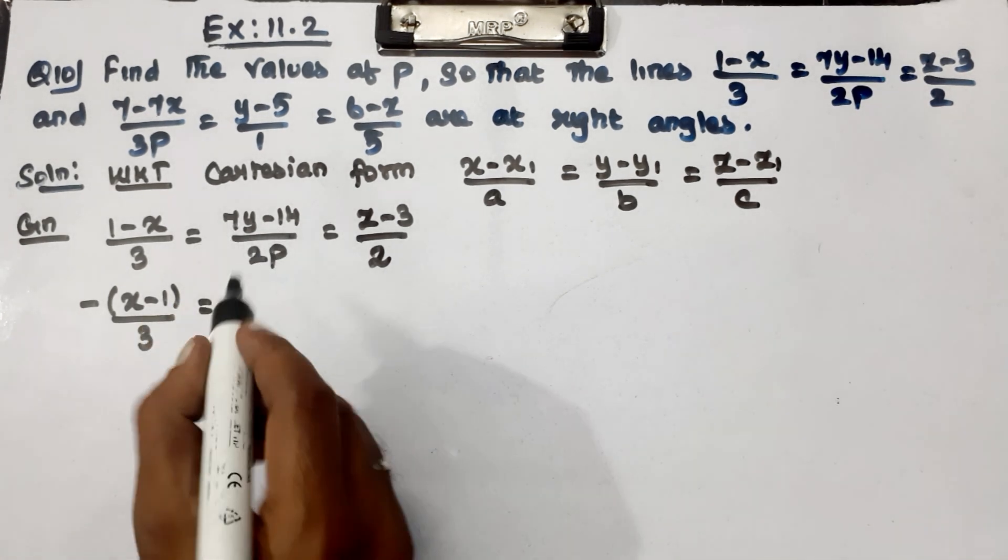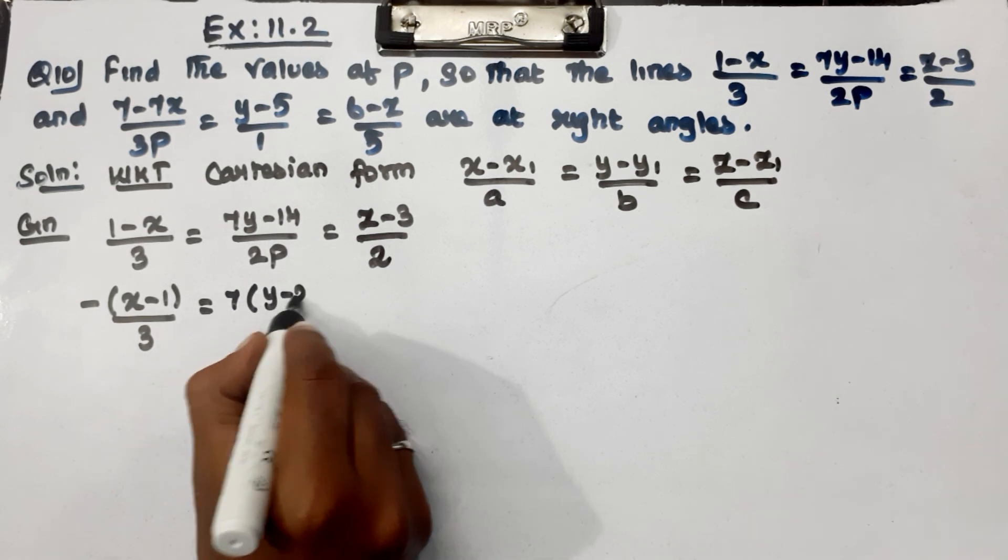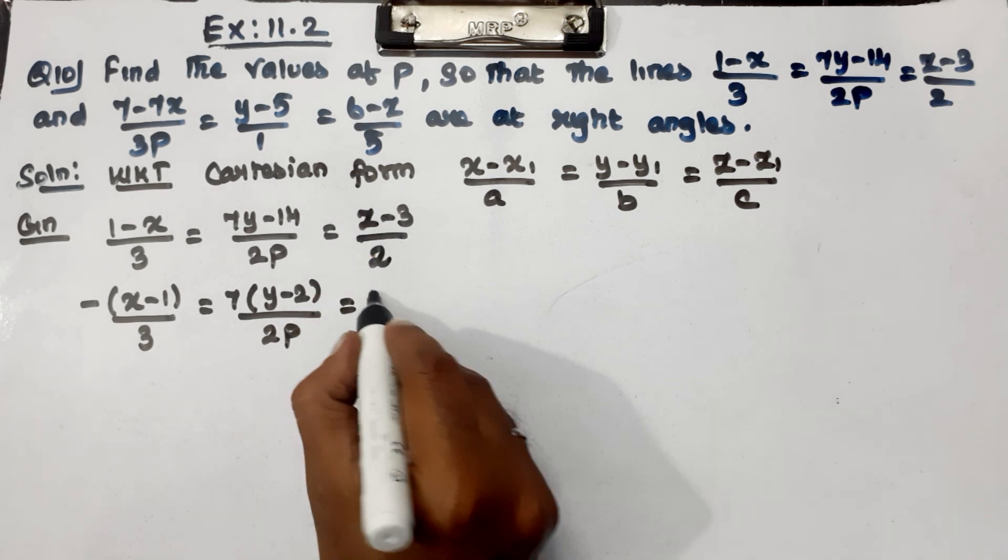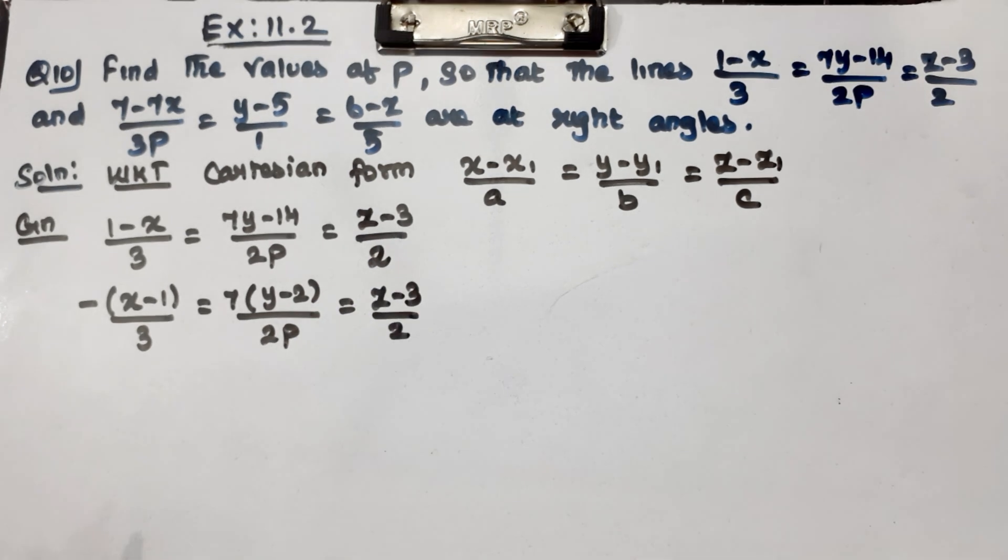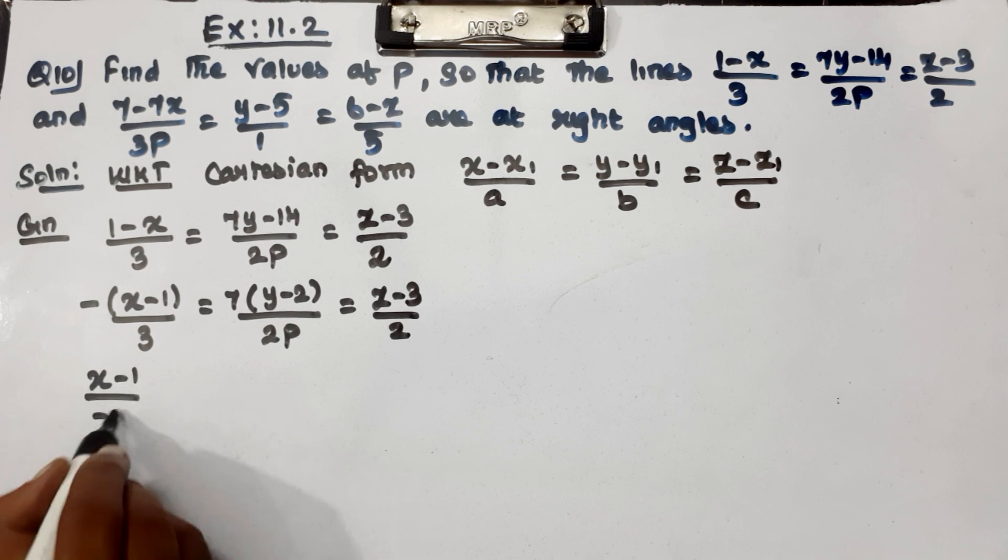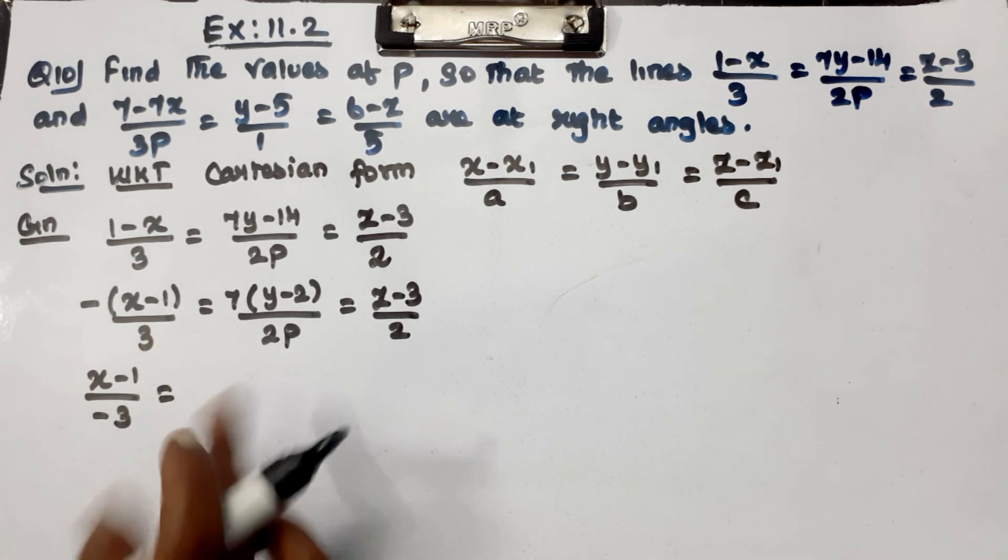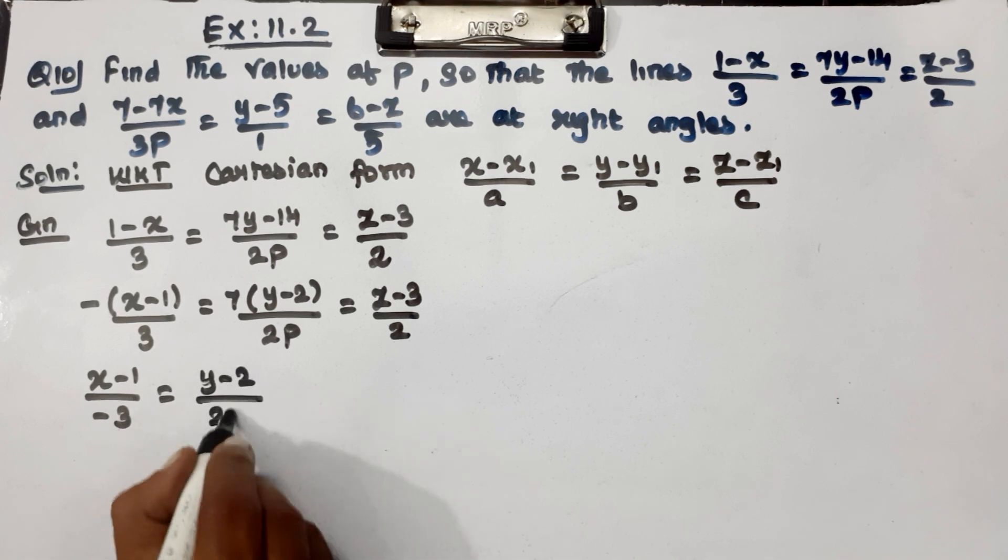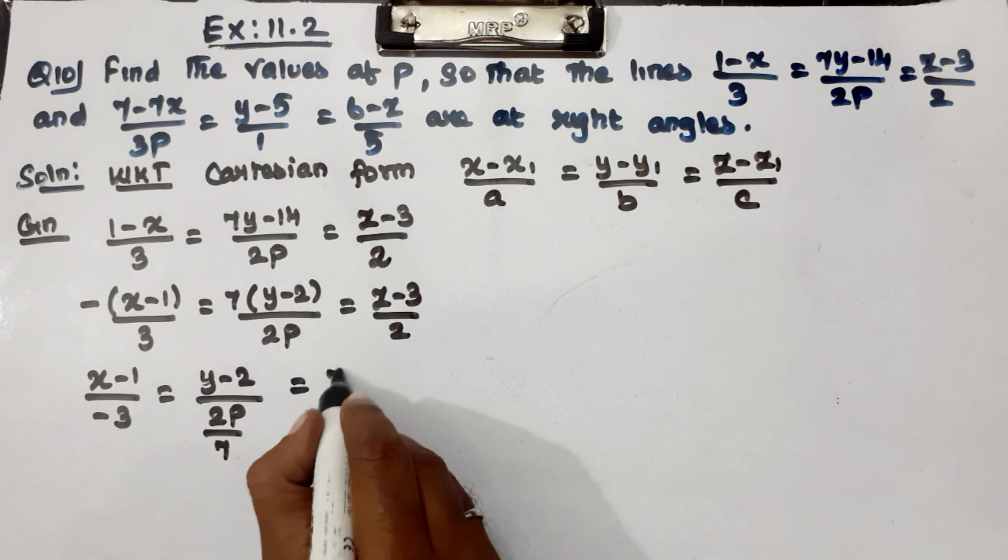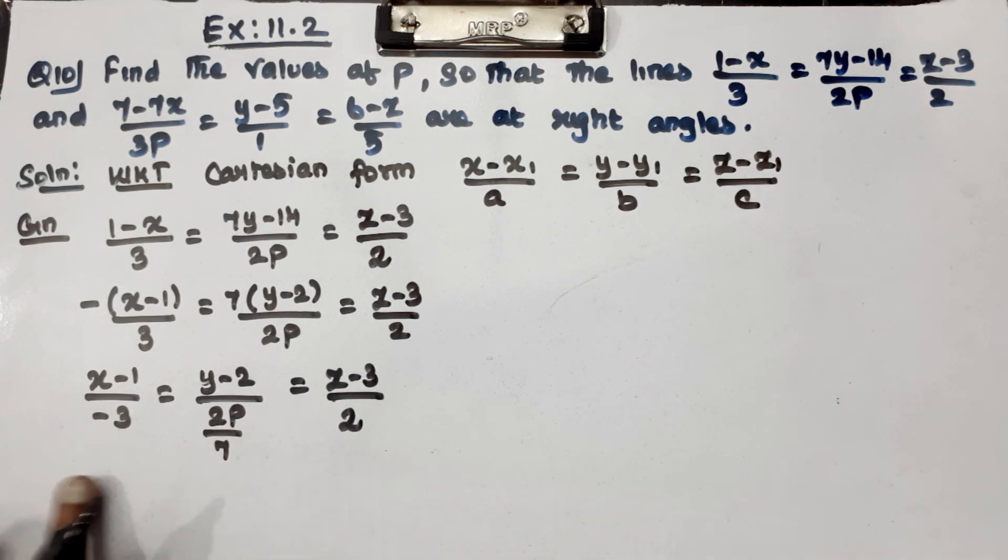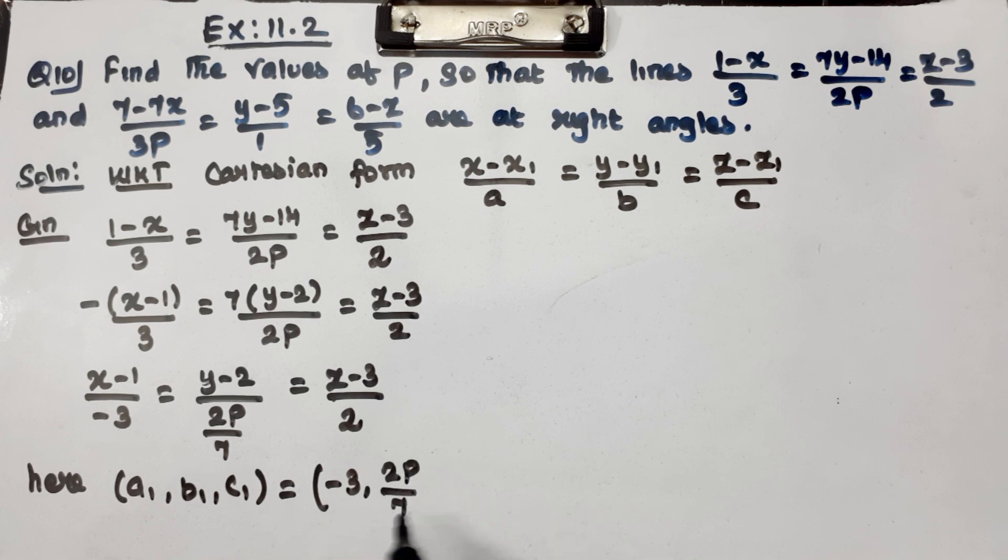Convert to Cartesian form. You can write minus x minus 1 by minus 3 equal to y minus 2 by 2p by 7 equal to z minus 3 by 2. This is the equation of the first line. Here a1, b1, c1 equal to minus 3, 2p by 7, 2.